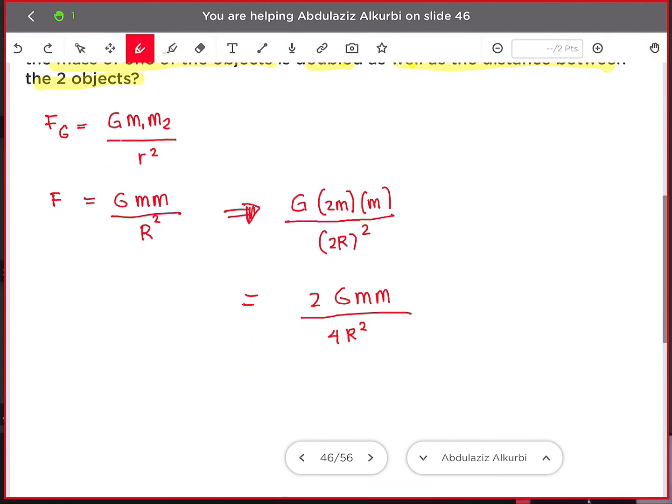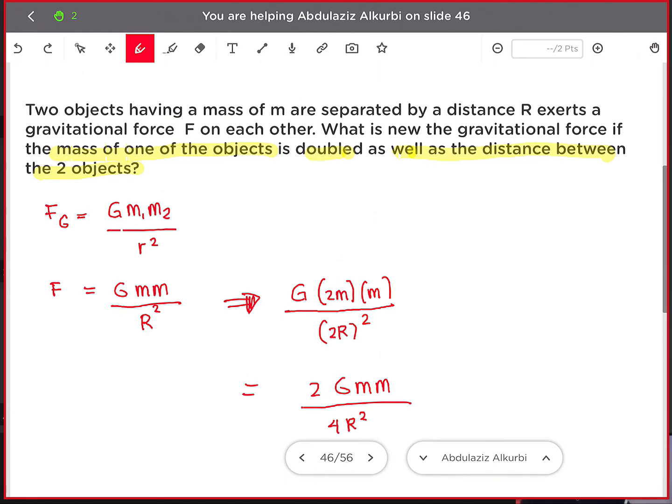Any questions so far? No, Mr. All right. Mr., how R squared become 2R squared? Say that again. How R squared become 2R squared? Because it says here that we are doubling the distance between the two objects. We double the mass as well as the distance between them. So that is why our R, this R right here,